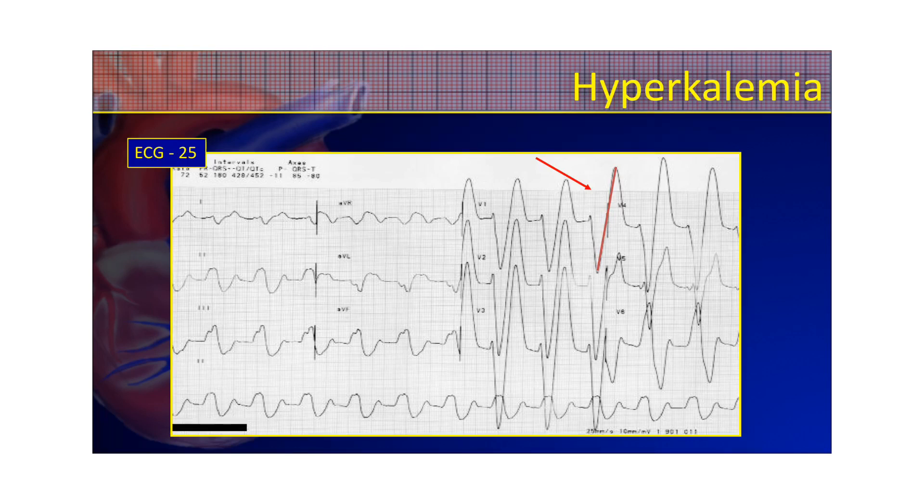And here we have an example of a sine wave. Now this is severe hyperkalemia. This patient's potassium is very elevated, and this is close to being lethal. This patient might not live very long. Look how wide those QRS complexes are. That's much wider than any ventricular rhythm. So this patient has a severely high critical level of potassium and is at very high risk of going into cardiac arrest.